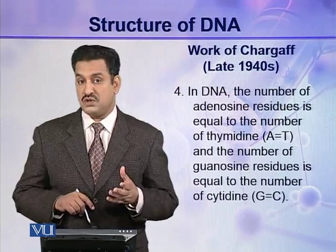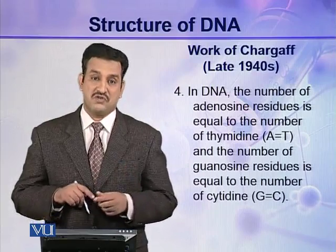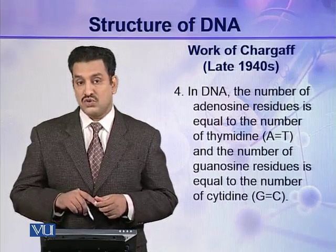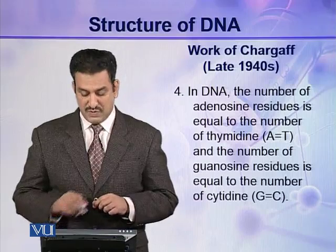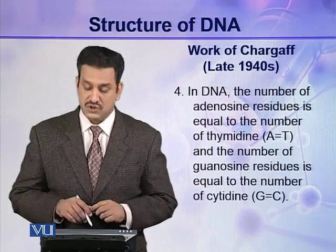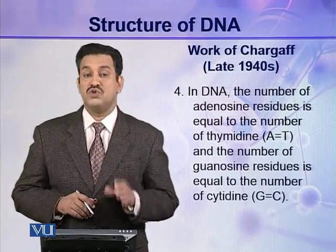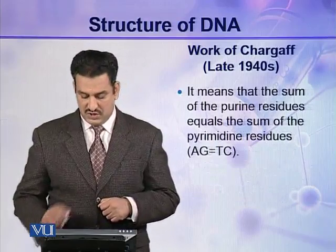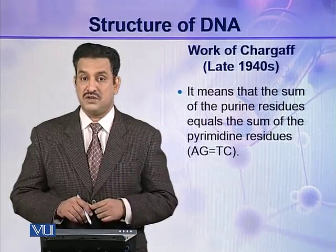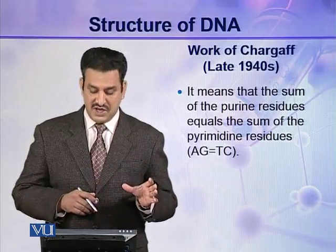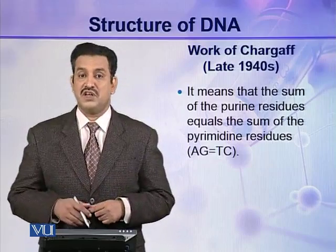The fourth point is perhaps the most important, and it gave the most important clue to Watson and Crick, who finally described the structure of DNA. This rule states that the number of adenosine residues in DNA is equal to the number of thymidine residues, and similarly, the number of guanosine residues is equal to the number of cytidine residues — that is, A is always equal to T and G is always equal to C. This means that the sum of purines equals the sum of pyrimidines, since A and G are purines and T and C are pyrimidines.